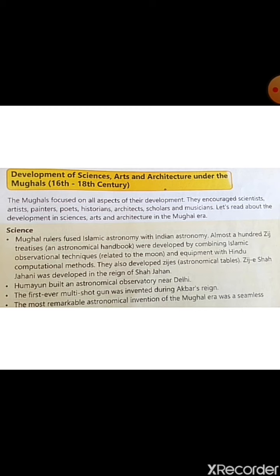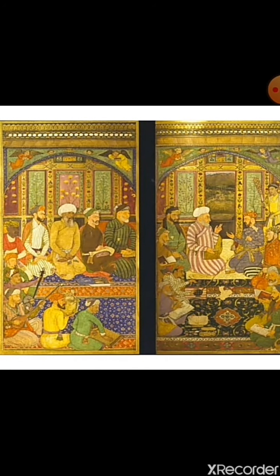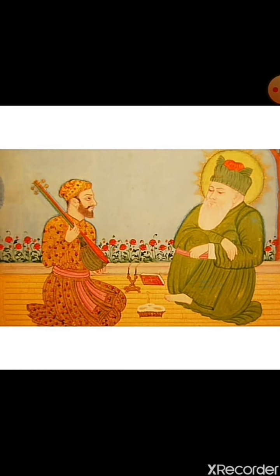In the Mughal era, what developments occurred in sciences, arts and architecture? The Mughals focused on all aspects of their development. They encouraged scientists, artists, painters, poets, historians, architects, scholars and musicians greatly during their era.